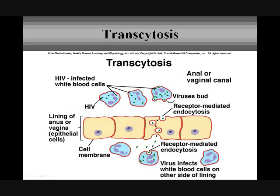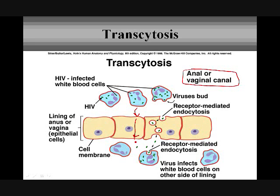As we can see here, white blood cells infected with HIV — these little viruses — are able to get out and come in through endocytosis, pass through epithelial cells, and transfer into the cells on the other side of the lining. The infected cells enter your body and are able to pass right through the lining of those organs and into your bloodstream, where they can infect your cells. This pretty much wraps it up for our lesson on cellular transport.